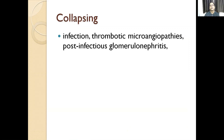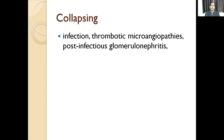Coming to the collapsing type: whenever we say collapsing, the glomerulus gets retracted and collapsed. It may be due to infection, thrombotic microangiopathy, or post-infectious glomerulonephritis. It is usually also seen in HIV nephropathy. In HIV nephropathy, the tubular reticuloendothelial cells also get proliferated and may form some inclusion type of finding which is characteristic of HIV.